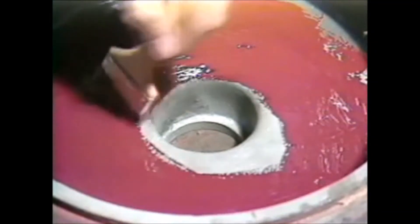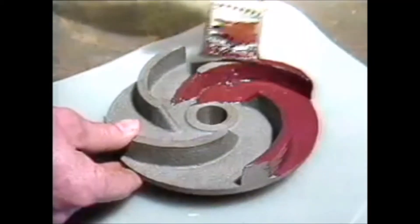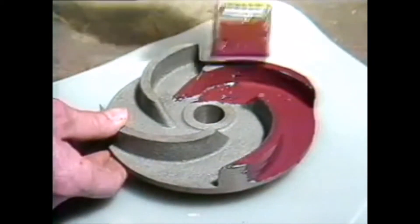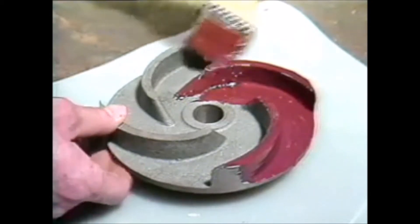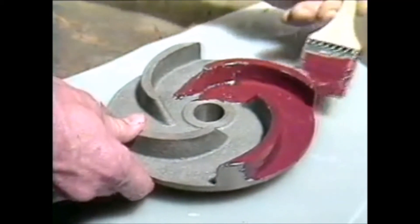Impellers that need repair due to normal wear and corrosion from water and chemicals can be rebuilt with titanium putty and then coated with brushable ceramic.